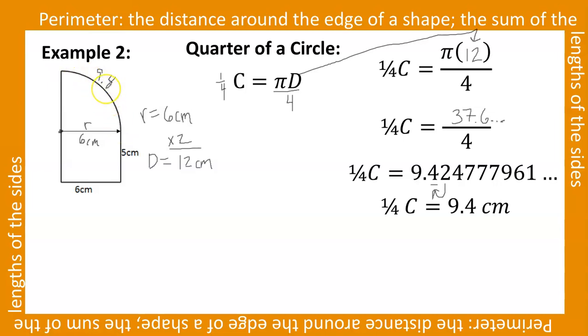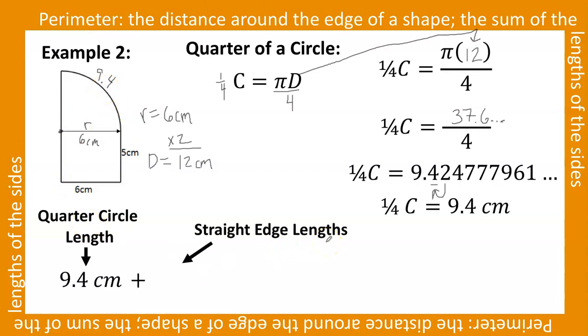So I take that length of the curved edge, the quarter circle length, and I'm going to add to that the straight edge lengths. So I'm going to start by adding this 6 centimeter length at the bottom of the composite shape. Then I'm going to add the 5 centimeter length here on the right. And then I know that this length over here, since it's across from that 5 centimeter length, it's also equal to 5 centimeters.